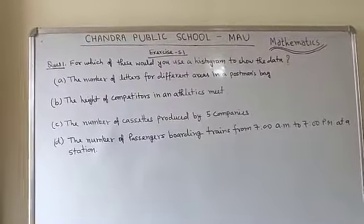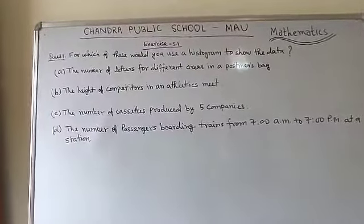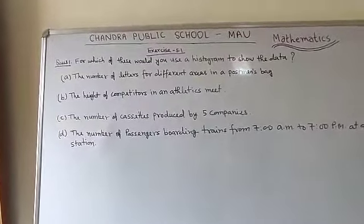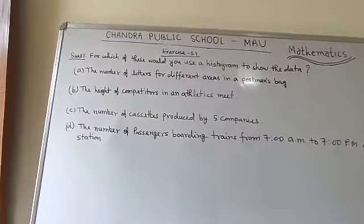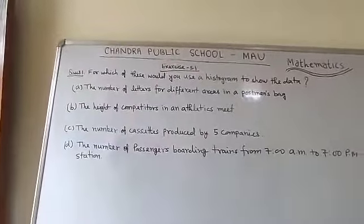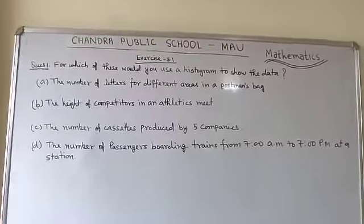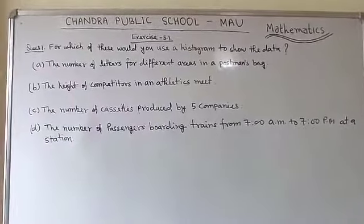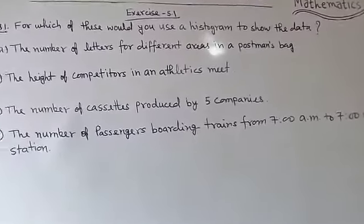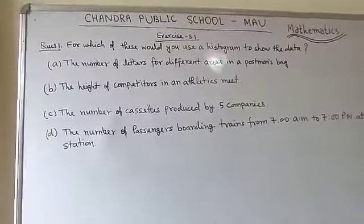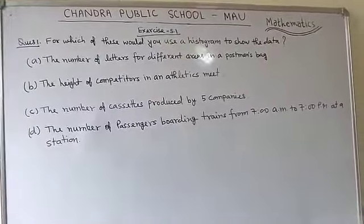So students, a histogram can only be prepared for data which is written in groups. It means groupings like 100 to 120, 120 to 130, 130 to 140. If the data is represented in a group, that data can be used for a histogram. So here we need to check whether grouping is possible for each given condition.